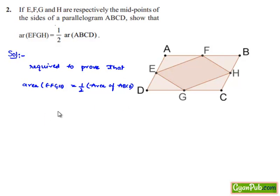So in order to prove this, let us initially join EF, FH, HG, and EG, and also join EH.